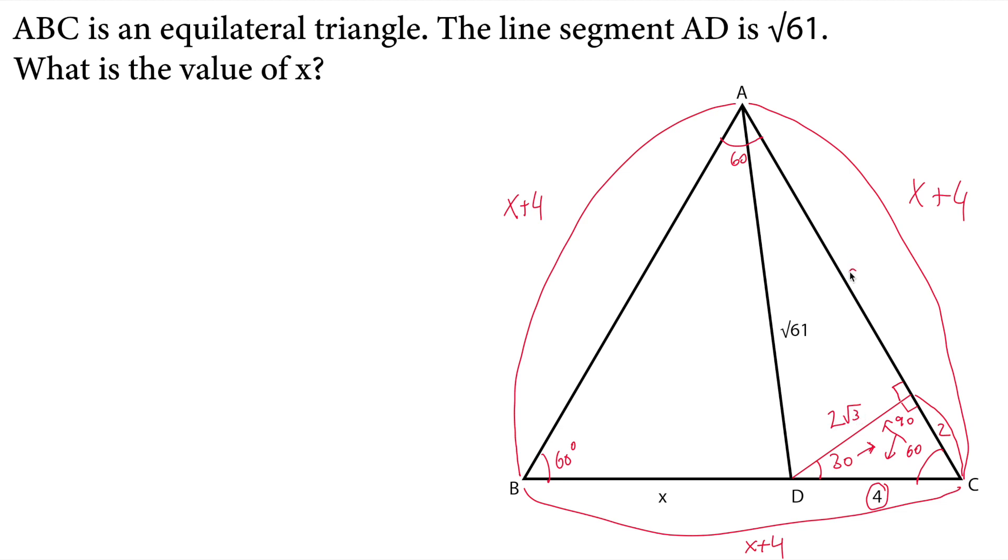Then I can apply Pythagorean theorem here. Square of a plus square of 2 square root of 3 will be equal to square of square root of 61.